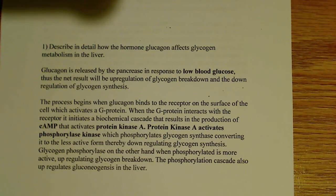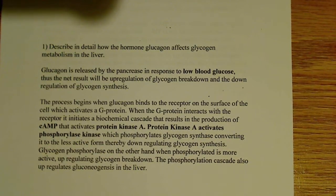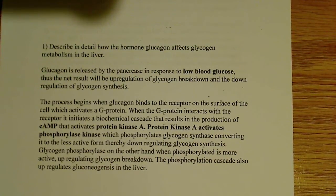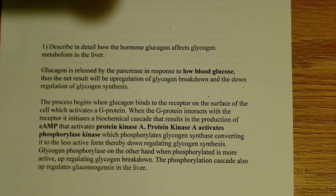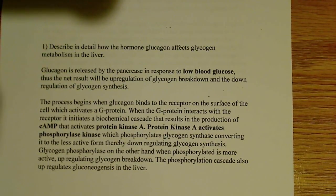Glucagon is released by the pancreas in response to low blood glucose, so the net result will be upregulation of glycogen breakdown. This is a hormone signal telling me I have low blood glucose, so one of the first things we're going to do is find some glucose. A great place to get glucose is to break down glycogen stored in the liver or in the muscle — most of it's in the liver. You're going to upregulate glycogen breakdown and downregulate glycogen synthesis. You're not going to be making glycogen, because just like all other anabolic processes, making glycogen requires energy. If you're low on energy and blood glucose is low, you're not going to be synthesizing any molecules.